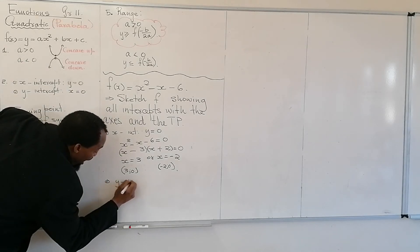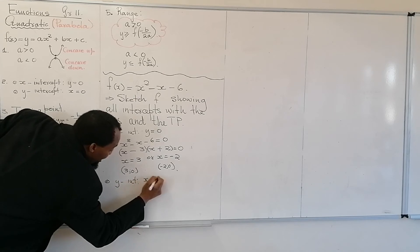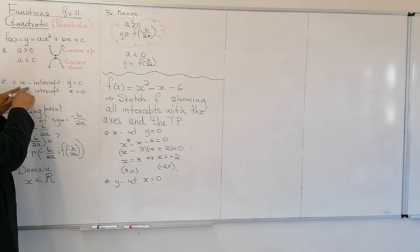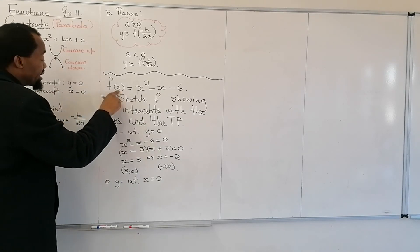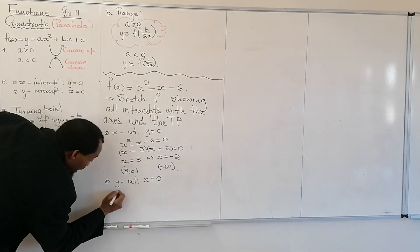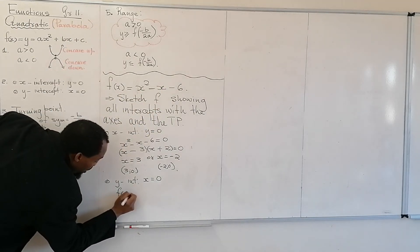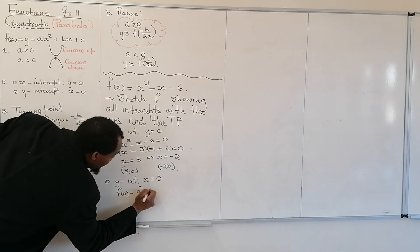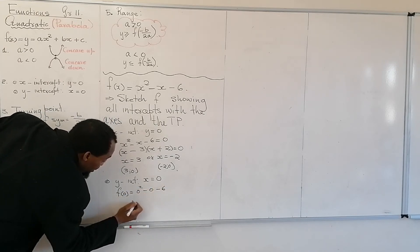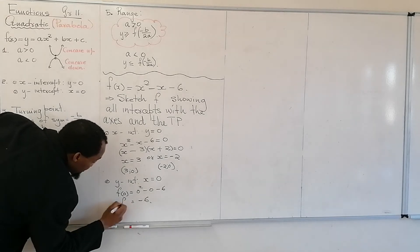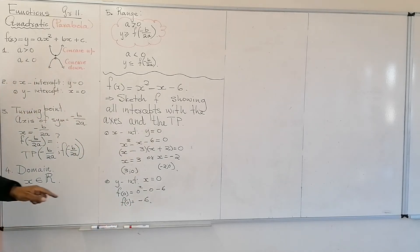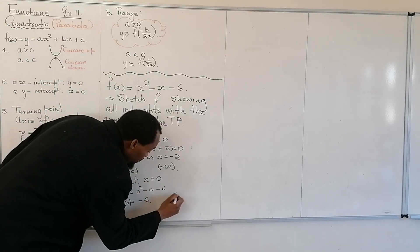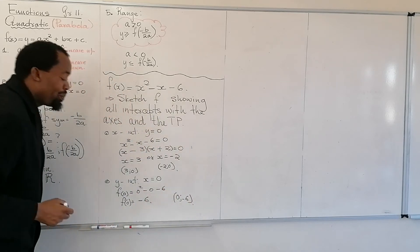Now let's determine the y-intercept. The y-intercept is where x equals zero. We substitute x equals zero into f of x: f of 0 equals 0 squared minus 0 minus 6, which equals negative 6. So the y-intercept is the point (0, −6).